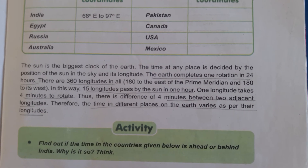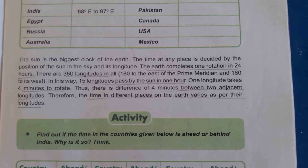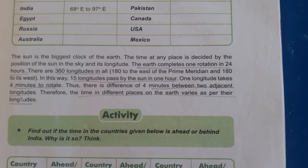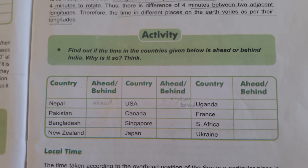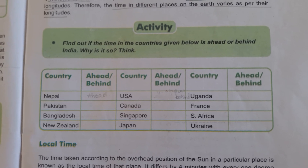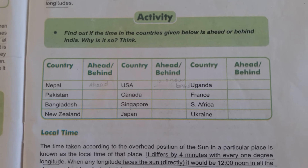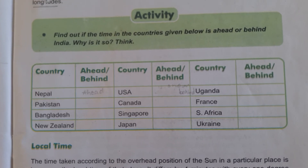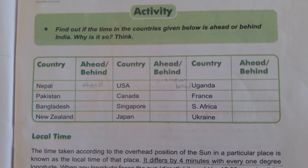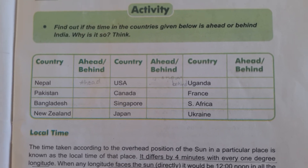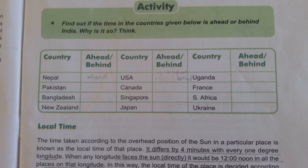The time in different places on the earth varies as per their longitude. In this activity, children, you have to write which country is ahead or behind India according to time. The country names are given; for example, Nepal is given and you have to calculate whether it is ahead or behind India in time.